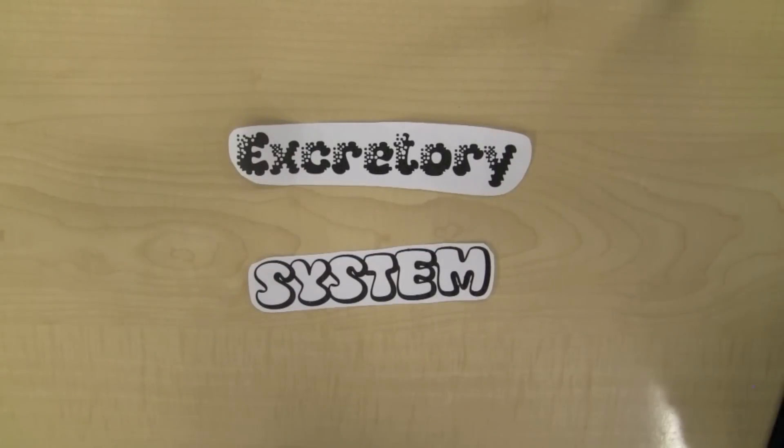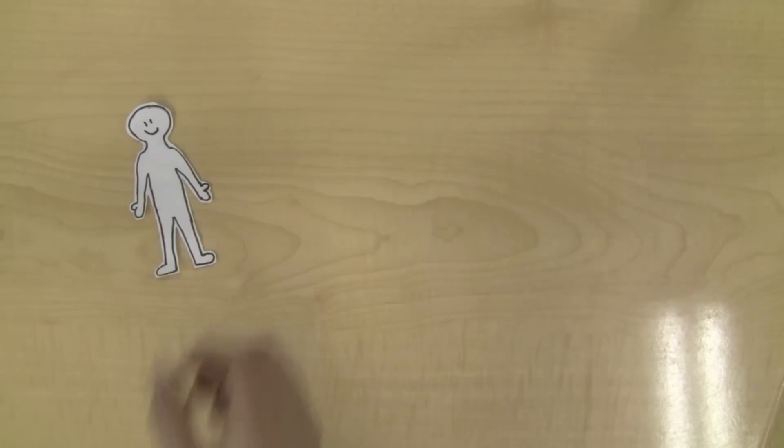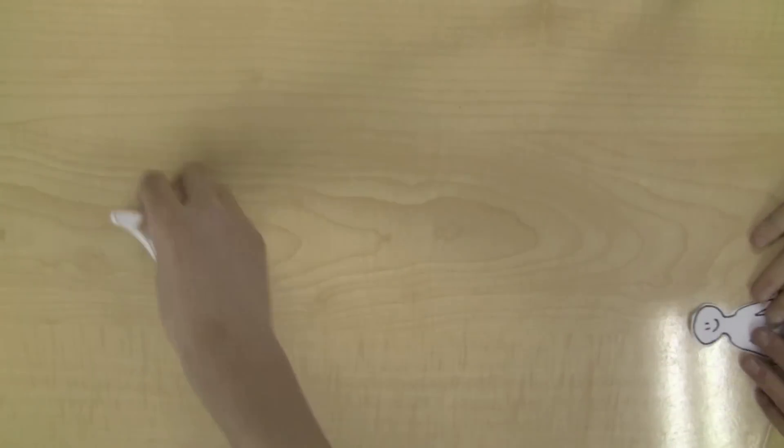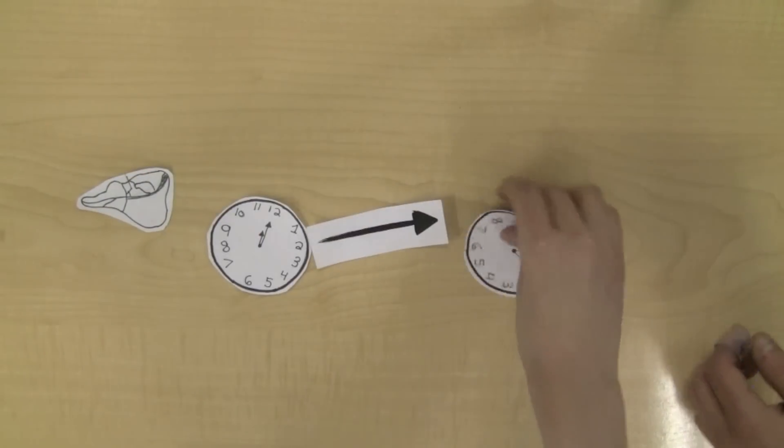The Excretory System in Plain English. Our bodies contain 5 liters of blood. It takes our liver about 5 minutes to filter all of the blood in our body.